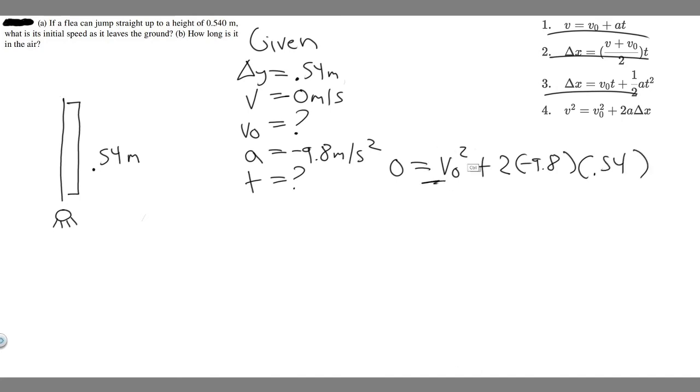What we can do is move this to the other side, minus V sub 0 squared, equals 2 times -9.8 times 0.54. If you notice here, this is going to become a negative number because there's only one negative. So it's going to be negative on this side, which would cancel with this side. So essentially, our negatives will go away, and then we can just square root both sides.